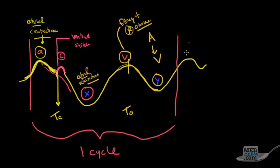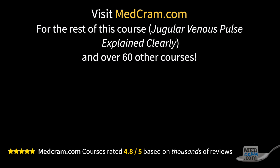To review: A is atrial contraction. C is ventricular contraction. X descent is atrial relaxation. V is passive atrial filling. And Y descent is blood going from the atria down to the ventricle, on the way back up to another atrial contraction. Thank you for joining us. Look for the second in the series where we talk about the pathology and how this waveform can actually help us make diagnoses.